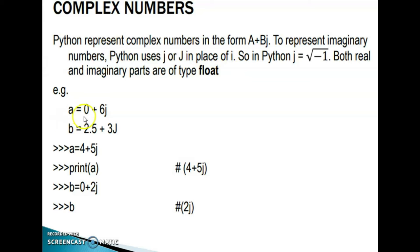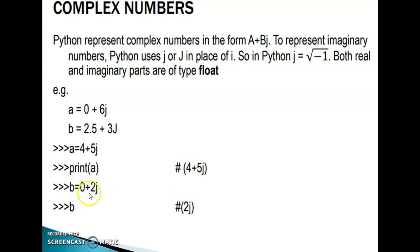Examples of complex numbers: a = 0 + 6j, b = 2.5 + 3j. If a = 4 + 5j, then print(a) gives 4+5j. If b = 0 + 2j, then print(b) gives 2j, because the real part is 0, so there is no need to specify '0 +'. Only the imaginary part is shown.